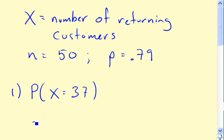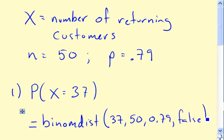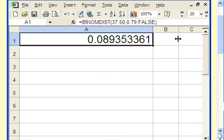Just to see what the function looks like, if you actually write it out. It's binomdist. In this case, it's 37, 50, 0.79. Forgot the cumulative part there. False. And we'll squeeze that in there, so just go back one more time and look. 0.0894.